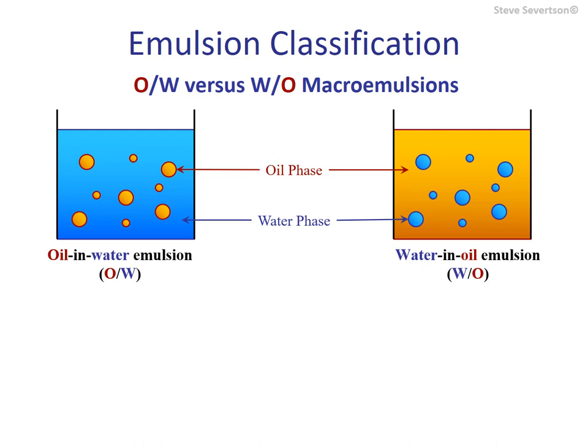These two types of emulsions do not exist in equilibrium with each other. One type will be inherently more stable than the other and will form in lieu of the less stable system. However, one type of emulsion can be converted to the other by changing system conditions in a process known as inversion, which will be discussed later. There are several characteristics that allow us to distinguish oil-in-water macro emulsions from the water-in-oil type, such as texture — a creamy texture versus a more greasy feel. An emulsion can be readily diluted by its continuous phase, but not so much by its particle phase.